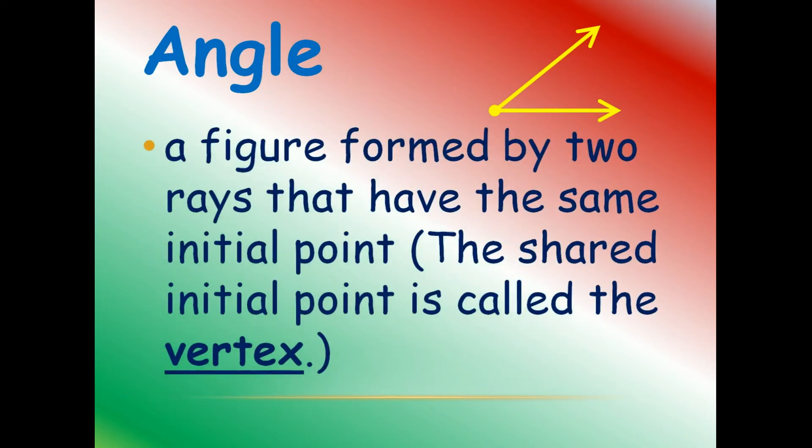What is an angle? Do you know that? A figure formed by two rays that have the same initial point. The shared initial point is called as vertex.